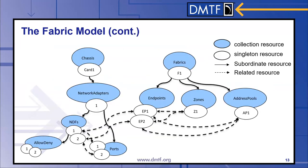From a relationship model, taking our card 1 example again, we have one network adapter and two network device functions with two ports. On the right side, we have our fabric model with endpoint collections, zone collection, and address pools collection. In this case, we have two endpoints: EP1 maps to network device function 1, and EP2 maps to network device function 2. There is a single zone defined where both endpoints are mapped, and a single address pool showing a common set of networking settings applied to both endpoints.